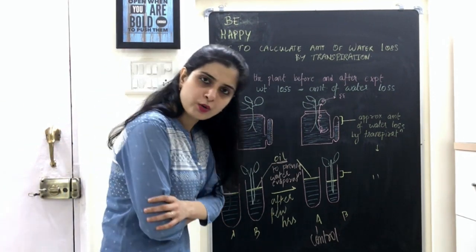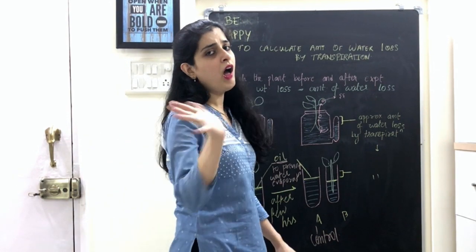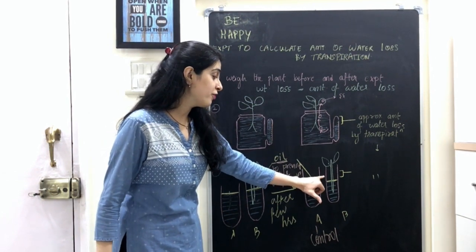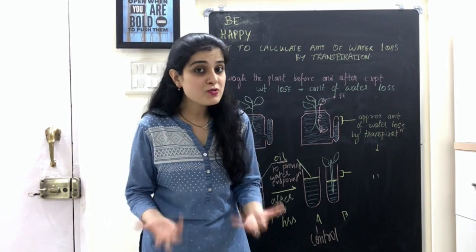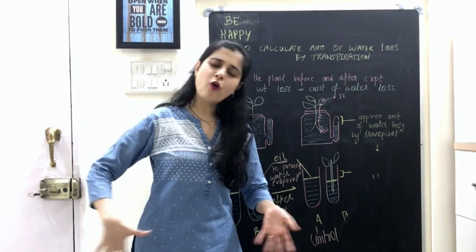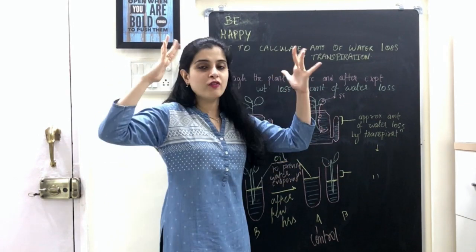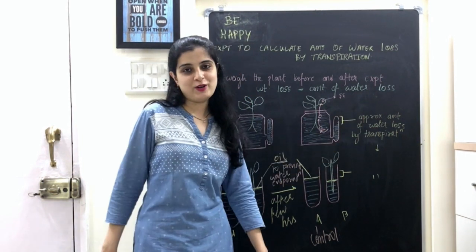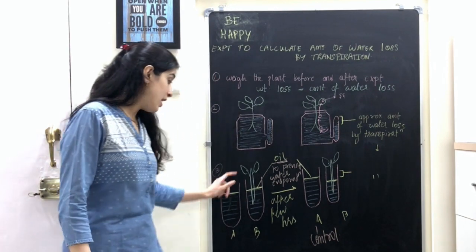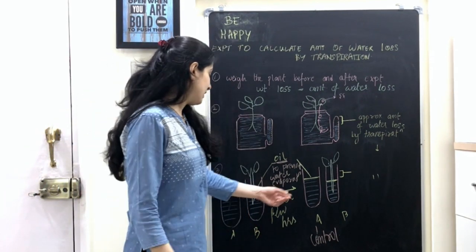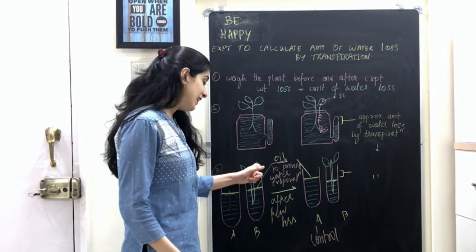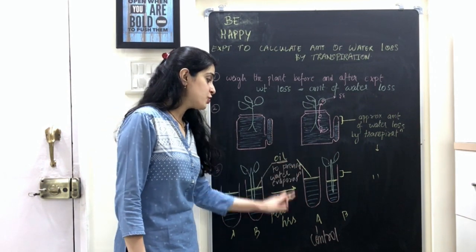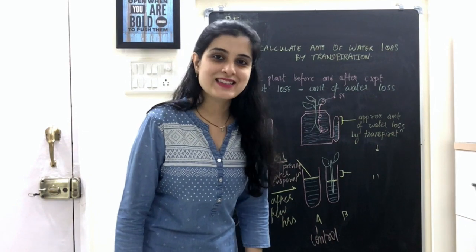After a few hours, there is no change in test tube A, but the water level in test tube B will fall. The amount of water that has fallen is the amount of water absorbed by the plant. The amount of water absorbed is approximately the same as the amount of water given out by transpiration. So the fall in water level gives the approximate amount of water loss by transpiration. Test tube A acts as a control setup — without the plant, there is no change, proving that the plant causes the water loss.